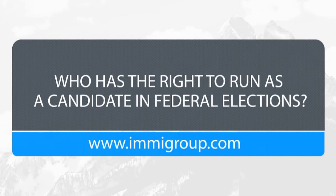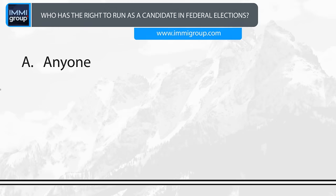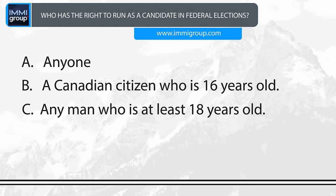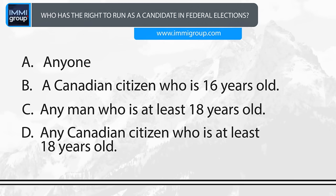Who has the right to run as a candidate in federal elections? A. Anyone. B. A Canadian citizen who is 16 years old. C. Any man who is at least 18 years old. D. Any Canadian citizen who is at least 18 years old. Answer: Any Canadian citizen who is at least 18 years old.